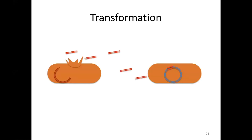Transformation is where bacteria sometimes die — they lyse, perhaps because they're infected by bacterial phages or for other reasons. When they lyse, they release their genome into the environment, and other bacteria can come along and pick up pieces of that DNA. Those bacteria have machinery to incorporate that DNA into their own genome. Most of the time, these incorporations of foreign DNA probably don't work, but if they do and confer something like antibiotic resistance, they can be very beneficial for the bacteria.